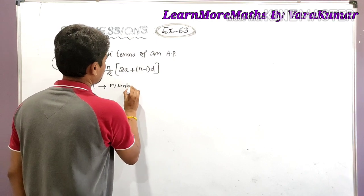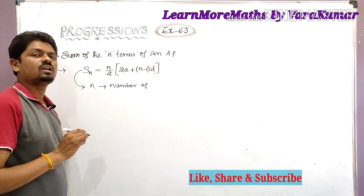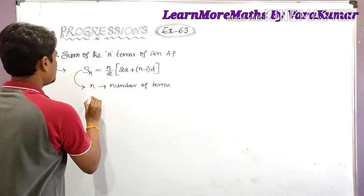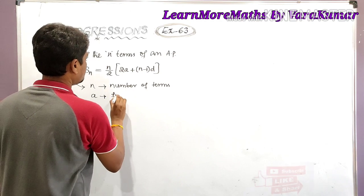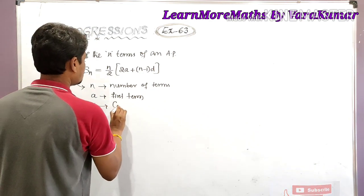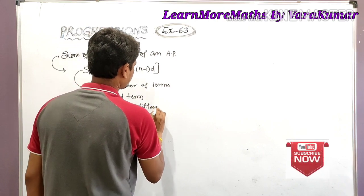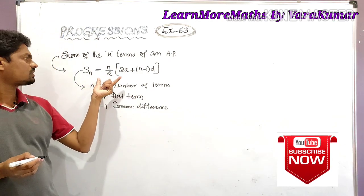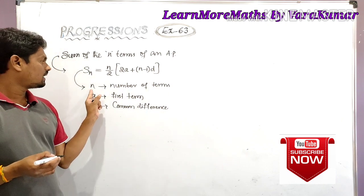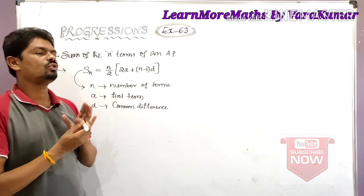Here n is the number of terms. For example, if you want to find the sum of 10 terms, n = 10; for 20 terms, n = 20. Also, a is the first term of the AP, and d is the common difference. If we know the values of a, d, and n, we can find the sum of the given AP up to n terms.